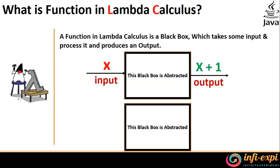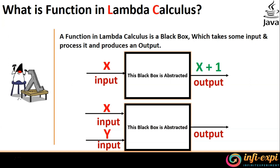Now let's take another example. I have another black box and you provide two inputs — first input is X and the second input is Y. In the earlier demonstration we gave a single input, but here it is about two inputs. Once you give those two inputs into the black box, it performs some abstracted operations which have been predefined, and then generates an output of X plus Y. There are two unknown variables, X and Y, and you offer those variables into the black box. The black box performs some operations and produces an output of X plus Y.